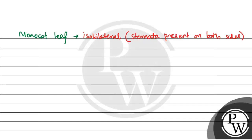Mesophyll here is not differentiated. The mesophyll here is not differentiated into spongy and palisade parenchyma. Examples include grasses.